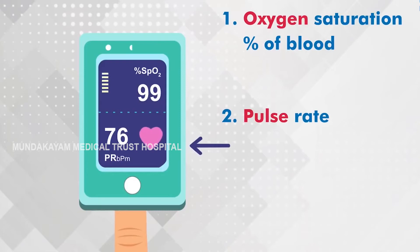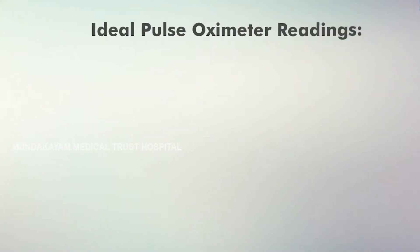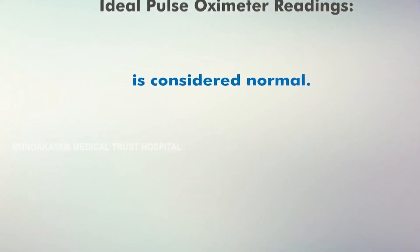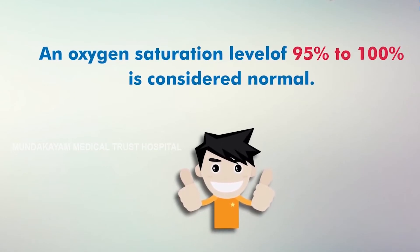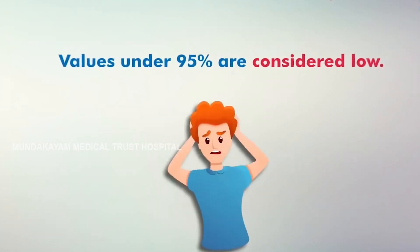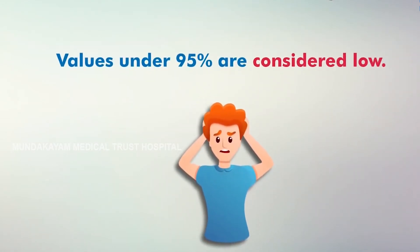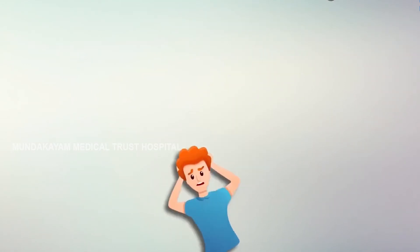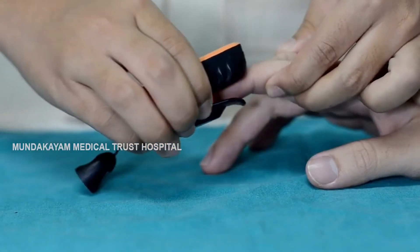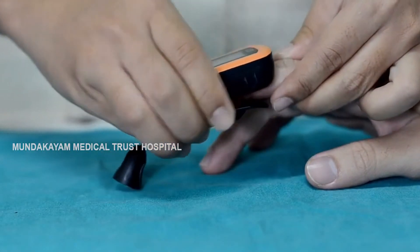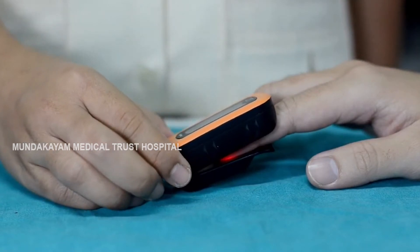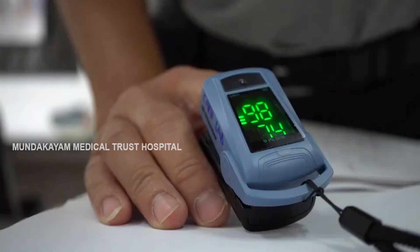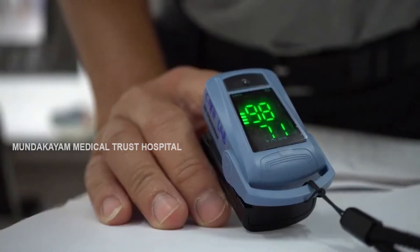Step 4: An oxygen saturation level of 95 to 100 is considered normal. Values under 95 are considered low. Step 5: A pulse oximeter can indicate whether you are having an infection or not; avoiding infection depends on your activities.